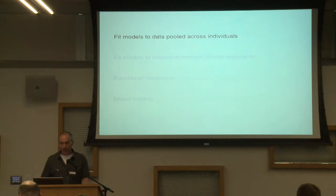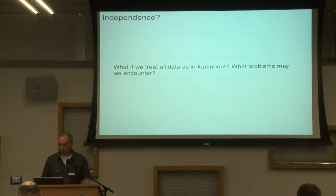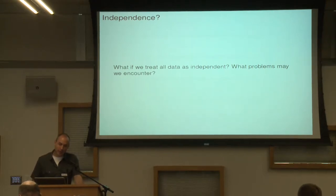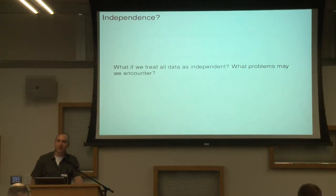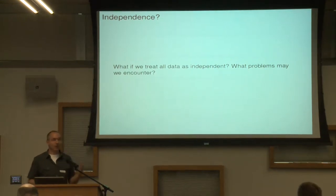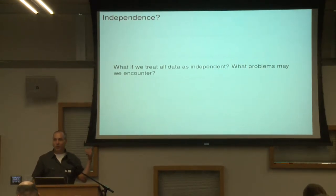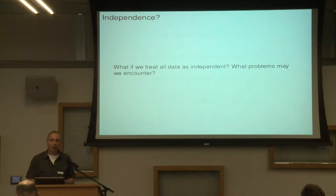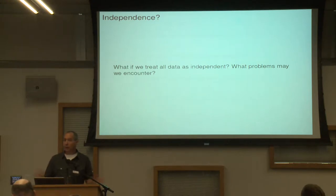One approach that's fairly simple is just pool all the data and fit a model that you might fit to an individual animal, and then see if you can fix up the standard errors for inference. So let's think about this. What if you treat all the observations as independent? What sort of problems might you encounter? This is another chance to talk with your neighbor and see if you can come to a conclusion. What do you think? Do you think this is an issue? What if we just take all of those Fisher data and say, let's fit a model — does use depend on population density and elevation — and pool everything together?